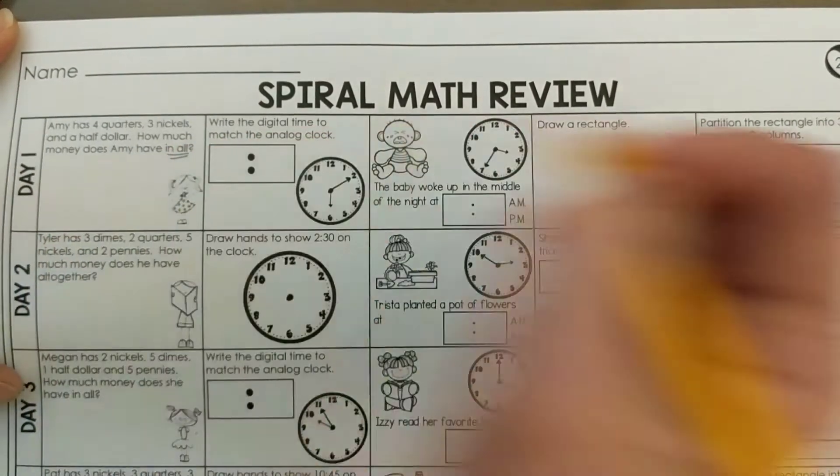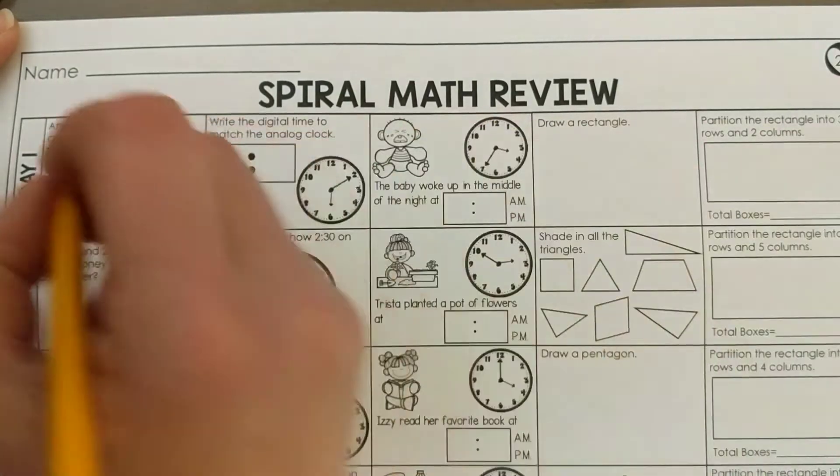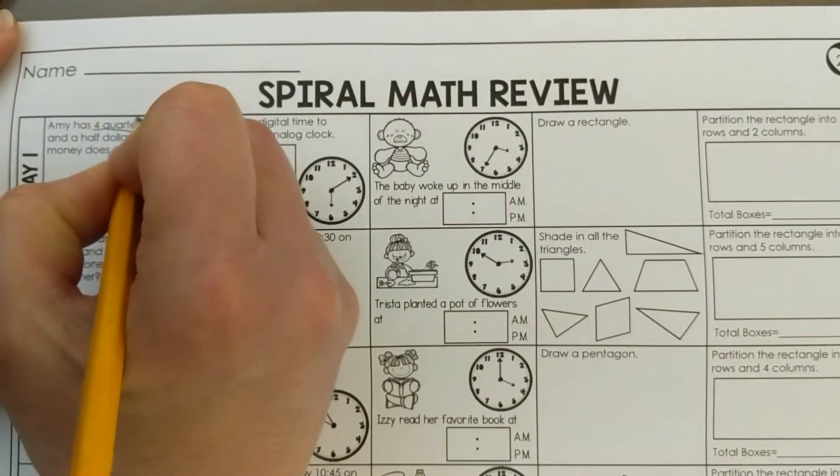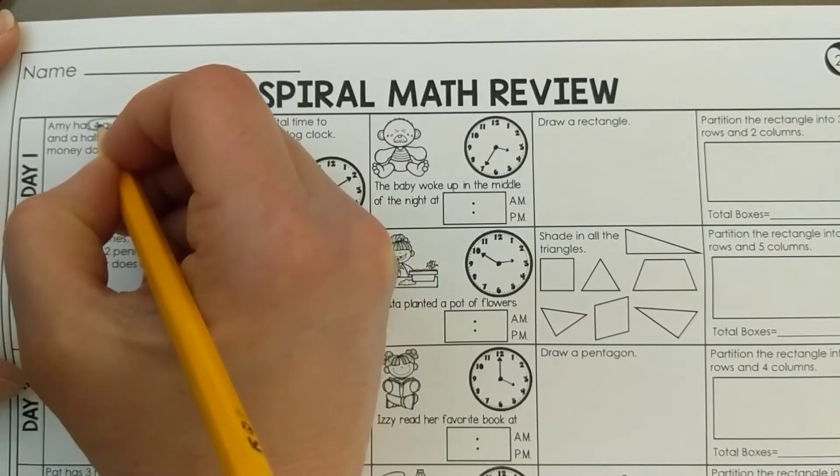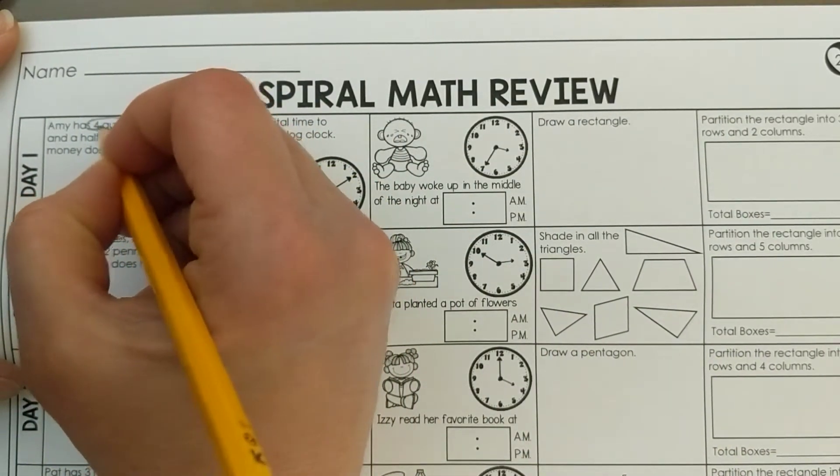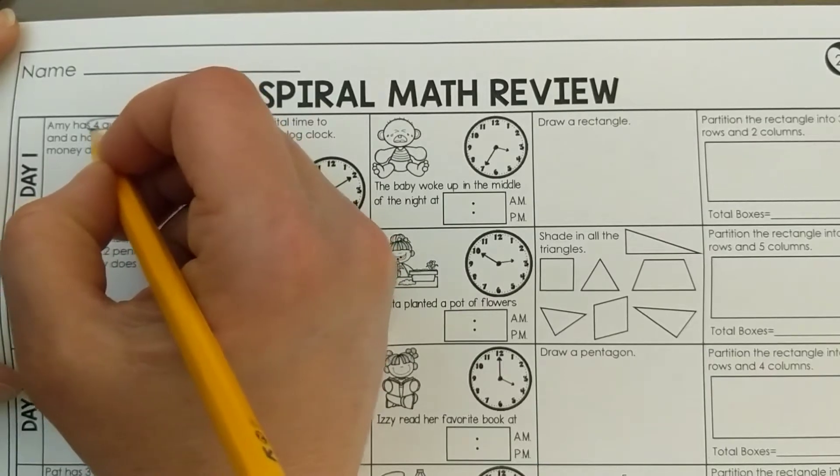In all means I'm going to add it all together. I'm going to start with four quarters. That's my magic number. I know four quarters is one dollar. I don't even have to count it.